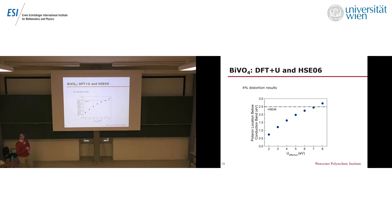Looking at BiVO4 with DFT+U versus HSE06: with the 4% distortion results, we can indeed get results that agree with the hybrid functional at higher U-values, around seven electron volts.